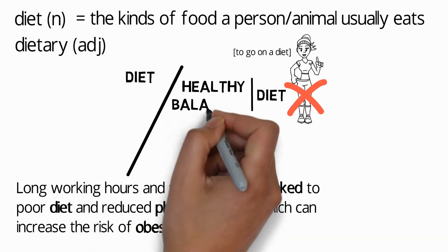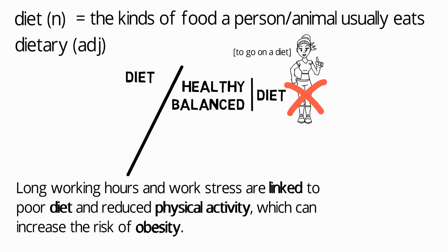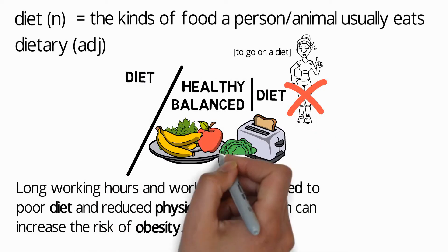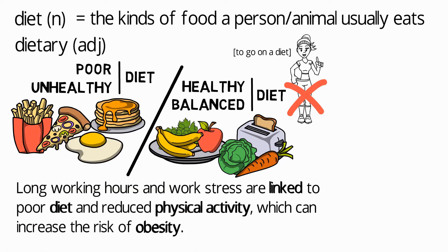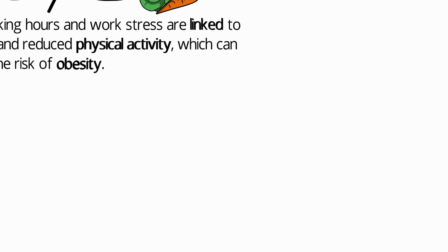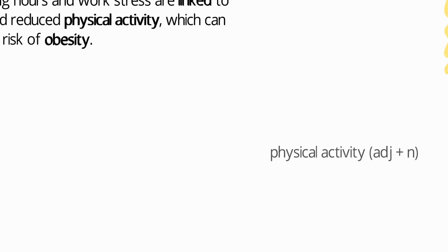Broadly speaking, there are two kinds of diet: you can have a healthy or balanced diet with plenty of fruit and vegetables, or a poor or unhealthy diet consisting of fried foods, fast foods, and sugary foods. Remember that to score well on the IELTS and TOEFL exam, you need good awareness of collocations such as 'healthy diet' and 'poor diet.' Next is the phrase 'physical activity,' an adjective and noun collocation from the Academic Collocation List.